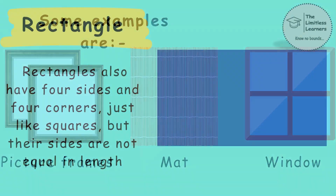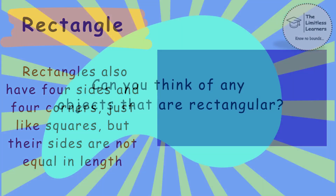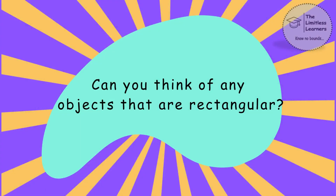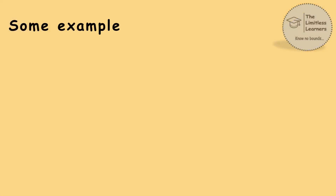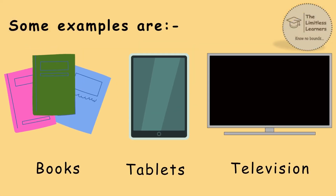Rectangle. Rectangles also have four sides and four corners, just like squares, but their sides are not equal in length. Can you think of any objects that are rectangular? Some examples are books, tablet and television.